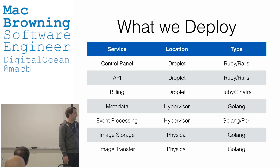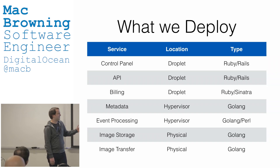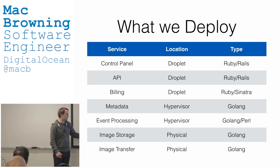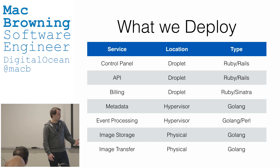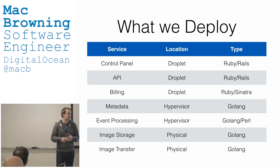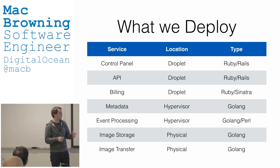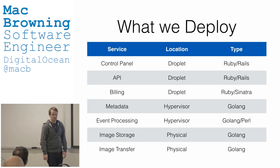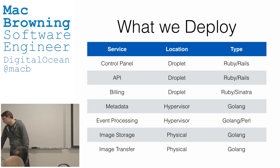I'm sure a lot of you already saw the Perl — yeah, it's a thing. It is another very stateful application, its artifact being the droplet it creates and the lifecycle it manages. The bottom two — image storage and image transfer — are two relatively new services at DO, internal platforms for managing droplet images. They both run on physical hardware, not the hypervisors, different physical hardware contained in each region, written in Go. Very stateful, very opinionated on where they're going to run and what the hardware will look like.